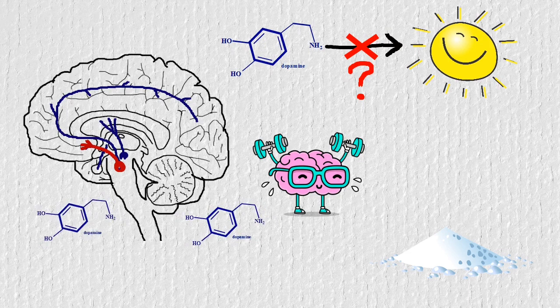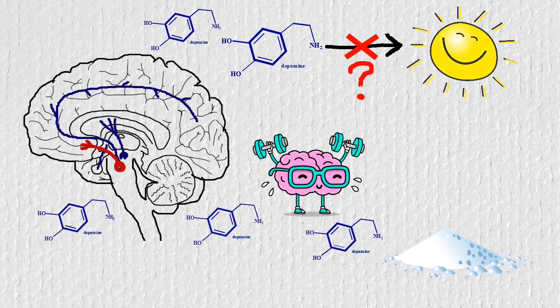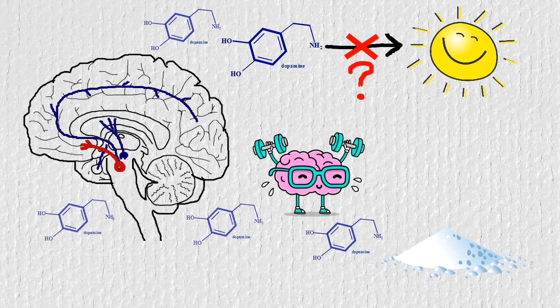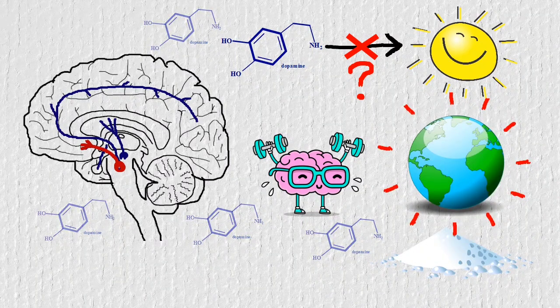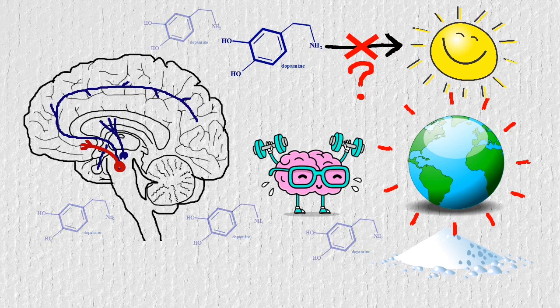When having lots of dopamine released by the reward system, you will not only be extremely motivated for whatever comes to your mind, but the whole world looks also more appealing. And this could cause a feeling that people could mistake with actual pleasure.